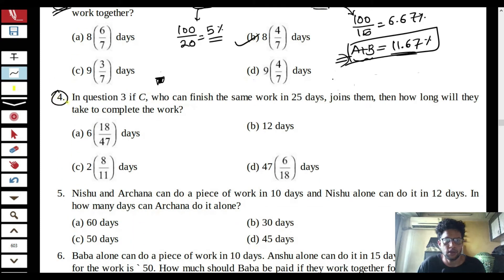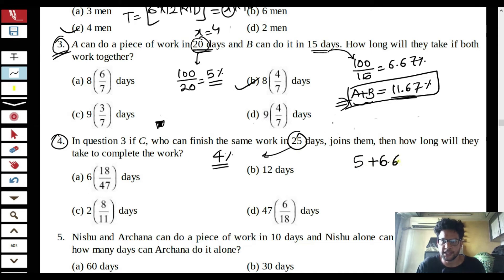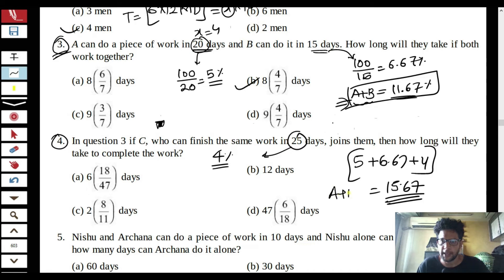Question 4 builds on Question 3: C finishes the same work in 25 days, meaning C does 100/25 = 4% of the work per day. If A, B, and C all work together, they complete 5% + 6.67% + 4% = 15.67% per day. The total work is finished in 100 divided by 15.67, which is roughly 6-point-something days. The answer is option A.